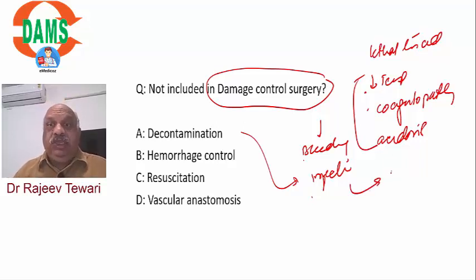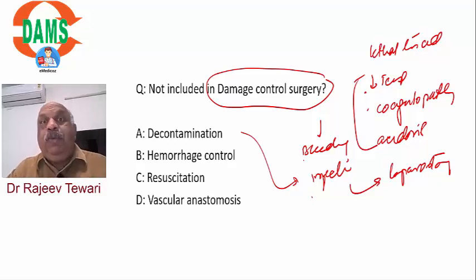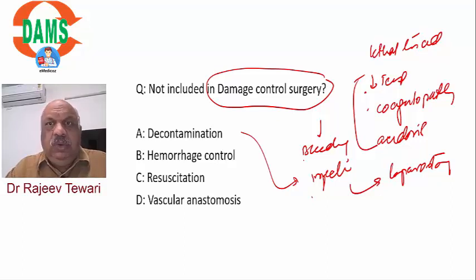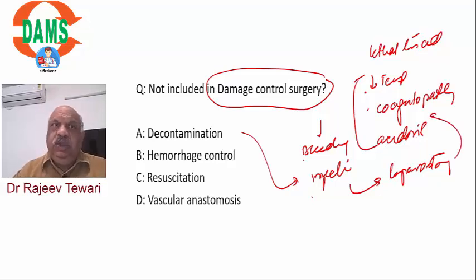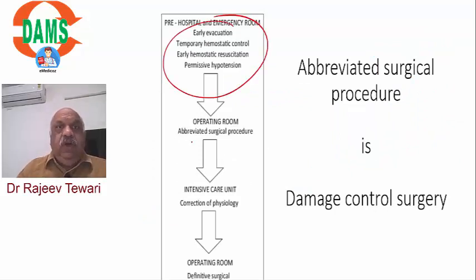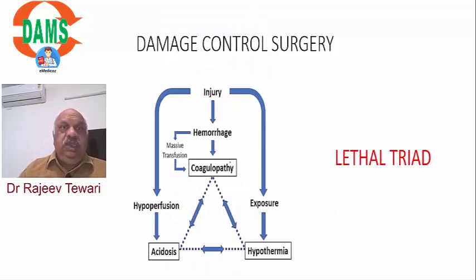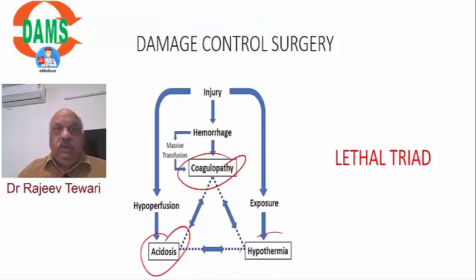Laparostomy (not laparotomy) means leaving the abdomen open with temporary closure such as a Bogota bag. After ICU stabilization, the patient returns to OT in 48 hours for definitive surgery. Indications for damage control: base deficit more than 8, pH less than 7.2, systolic BP less than 90, hypothermia, PTT more than 60. pH less than 7.21 and PTT more than 70 is almost 100% mortality. The lethal triad is coagulopathy, acidosis, and hypothermia.